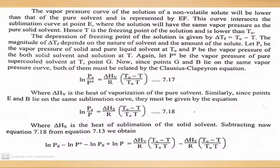And then this is the same equation: log(p_s/p_not) = ΔH_v/(R) × (1/T_not - 1/T) is the Clausius-Clapeyron equation.